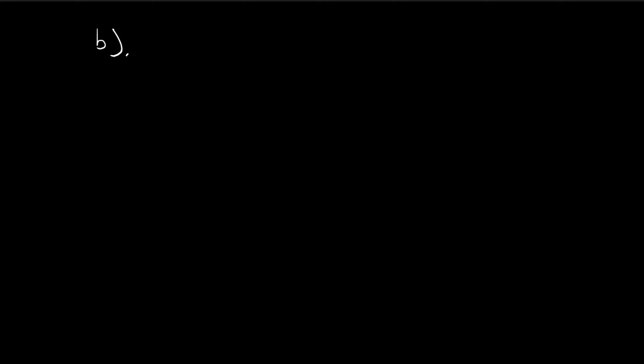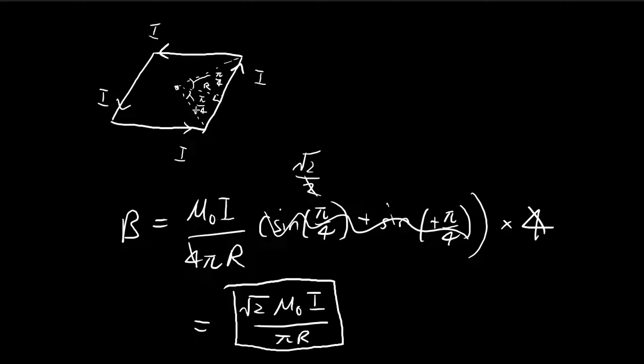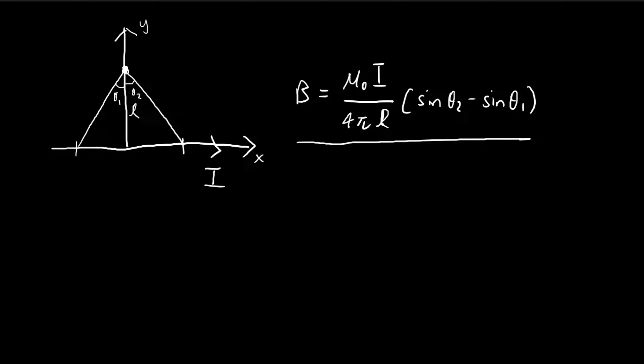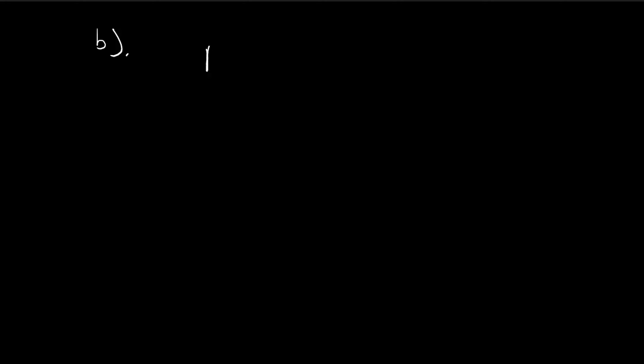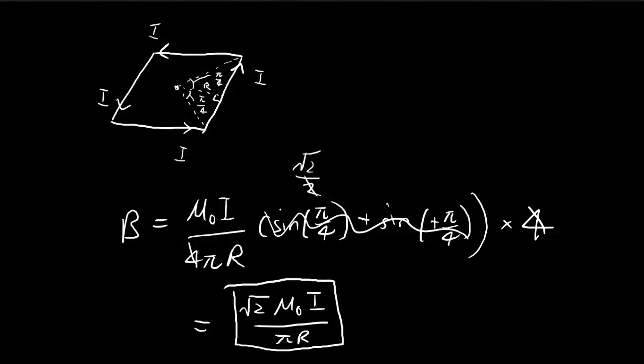For part B, we need to consider an n-sided polygon. We do the exact same thing: chop it up into n different slices of current, apply the formula, and then multiply it by n.